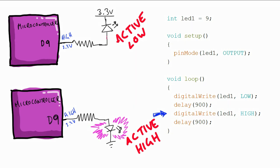So, the LED here is active low. When the pin is low, it is on. When it is high, it is off. So, this is active low.